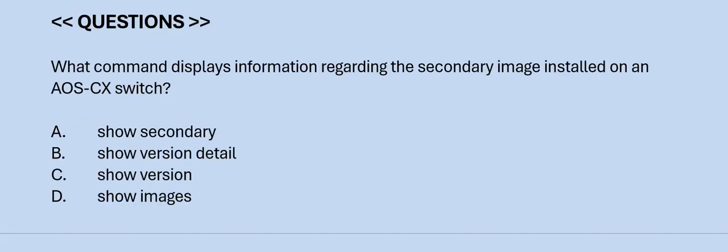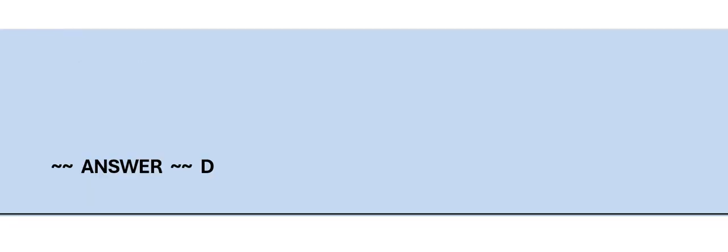Next question: What command displays information regarding the secondary image installed on an AOS-CX switch? Option A: show secondary. Option B: show version detail. Option C: show version. Option D: show images. The correct answer is Option D.